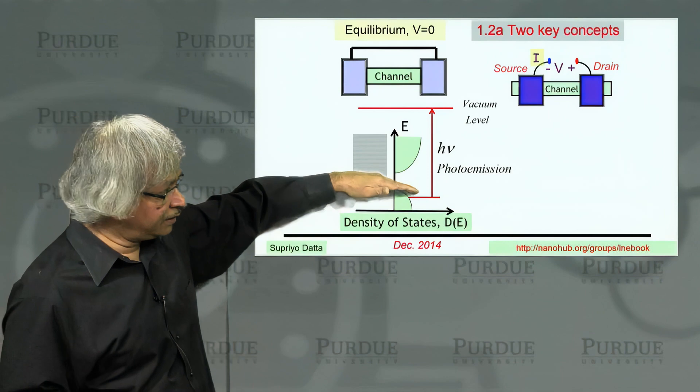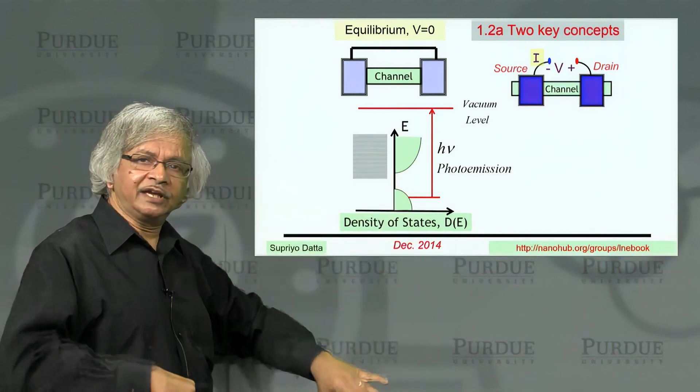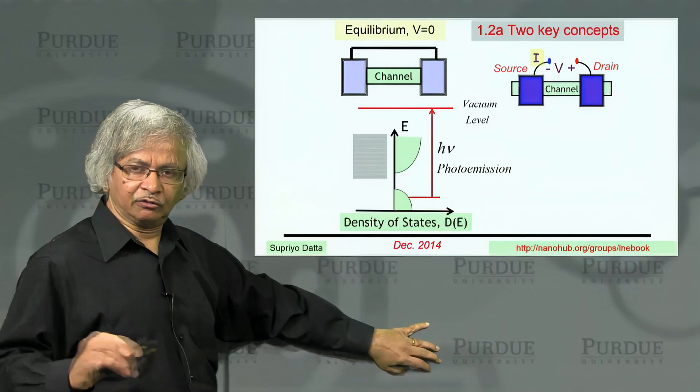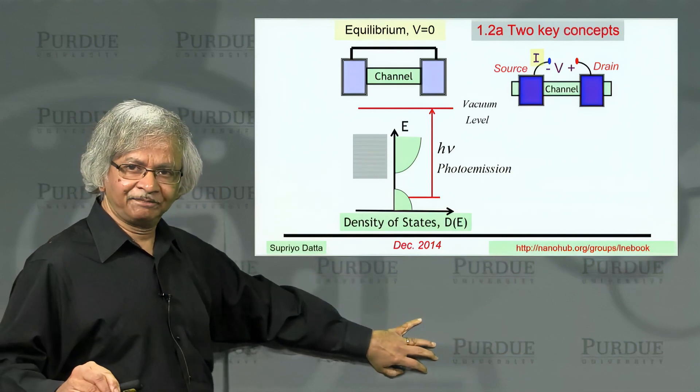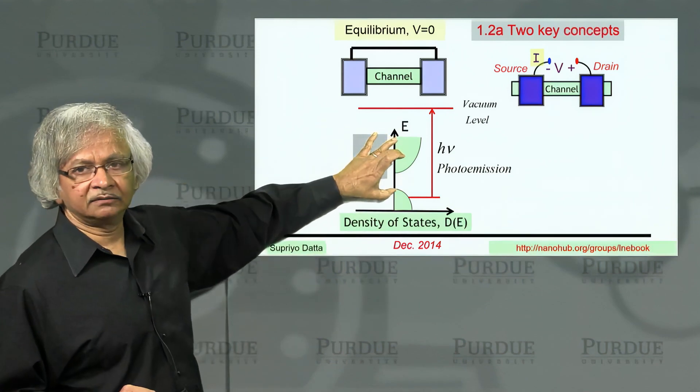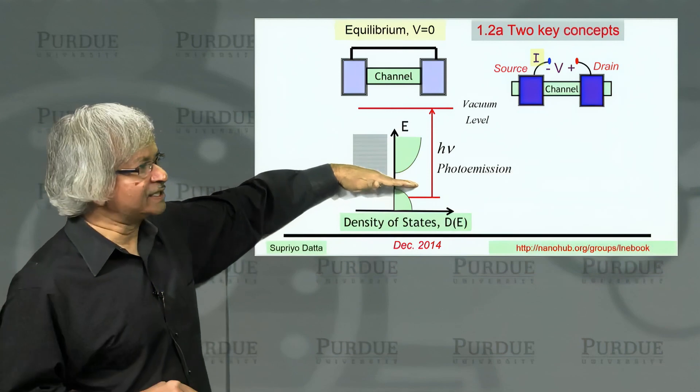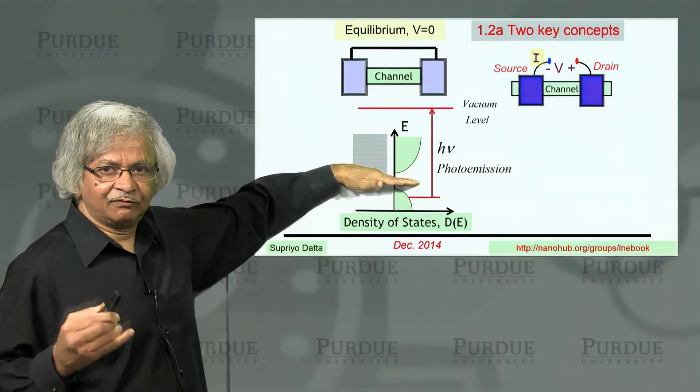These are the valence electrons, the ones that have the highest energies. There's lots of other states down here, the core electrons, which would take a lot more energy to knock out, like kilovolts. But as far as current flow is concerned, what really matters is the top part, the part near the Fermi energy.